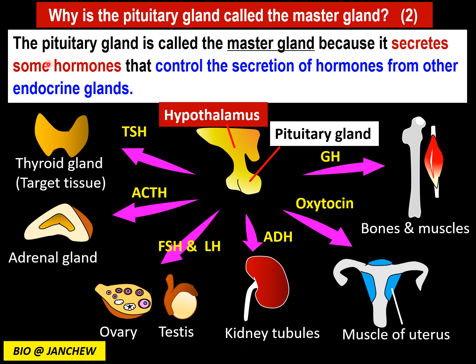A common exam question is: why is the pituitary gland called the master gland? We can say that the pituitary gland is called the master gland because it secretes hormones that control the secretion of hormones from other endocrine glands. The other endocrine glands must be stimulated by the master gland before they secrete their own hormones. For example, TSH (thyroid stimulating hormone) secreted from the pituitary gland reaches the thyroid gland and stimulates it to produce thyroxine.